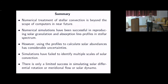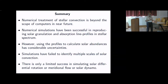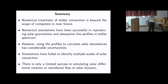In summary: the numerical treatment of stellar convection is beyond the scope of computers in the near future. Numerical simulations have been very successful in reproducing solar granulation and absorption line profiles in stellar spectra; however, using these profiles to calculate solar abundances has considerable uncertainties. Simulations have completely failed to identify multiple scales of solar convection and to simulate deeper layers. There is only limited success in simulating solar differential rotation, meridional flow, and solar dynamo. That is the current status.